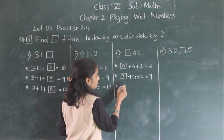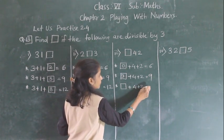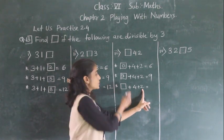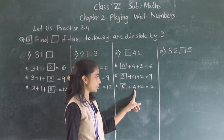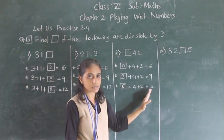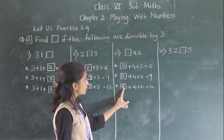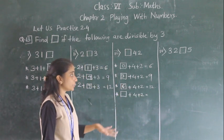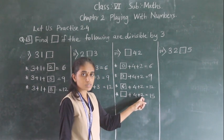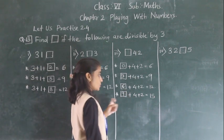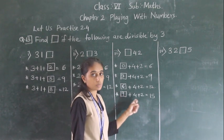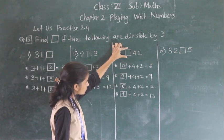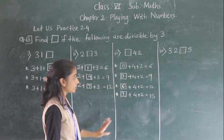Let's see the next numbers. What is the next multiple of 3 after 9? 12. 4 plus 2 is 6, 6 plus 6 is 12 — divisible by 3, so 6 can come. Then 6 plus 9 is 15, which is also divisible by 3, so 9 can come. So the numbers that can come in the place of the square are 0, 3, 6, and 9.